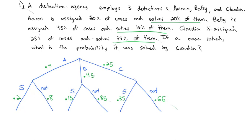We multiply down the branches to figure out any individual result. Aaron solved: 0.3 × 0.2 = 0.06. Aaron not solved: 0.3 × 0.8 = 0.24. Betty solved: 0.45 × 0.15 = 0.0675. Betty not solved: 0.45 × 0.85 = 0.3825. Claudia solved: 0.25 × 0.35 = 0.0875. Claudia not solved: 0.25 × 0.65 = 0.1625.